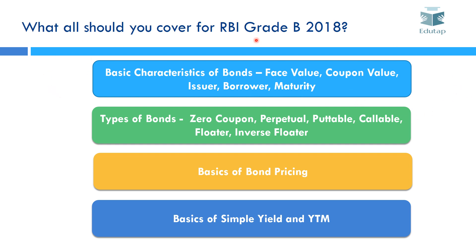Then you should study about types of bonds, which is very important — questions have been asked on this in the past. You should study about zero coupon, perpetual, putable, callable, floater, and inverse floater bonds. Then cover the basics of bond pricing, as questions on this have been asked in previous year exams. You should also study the basics of simple yield and YTM (yield to maturity), and be clearly able to differentiate between simple yield and YTM.